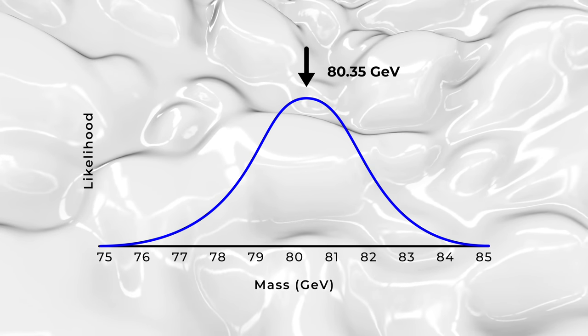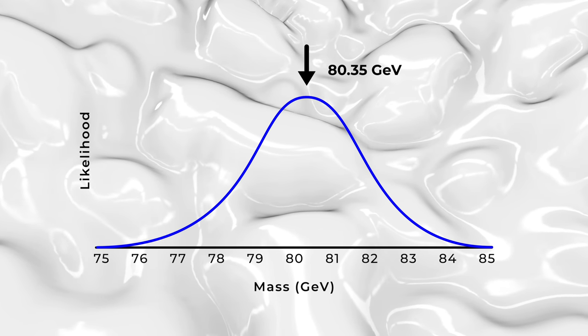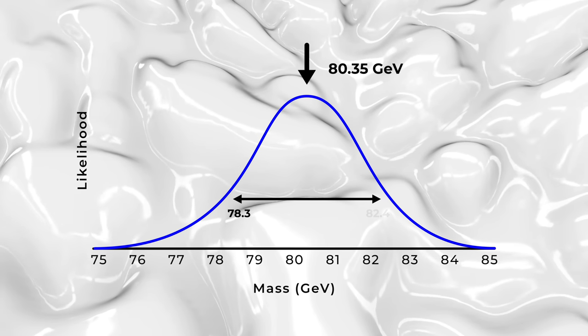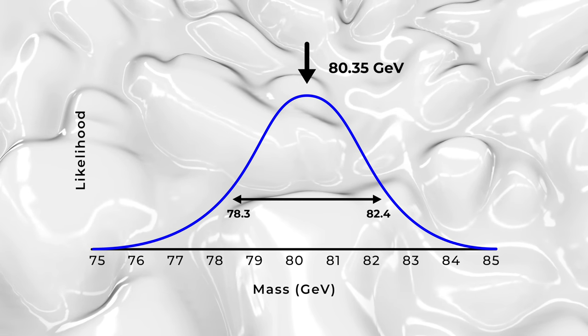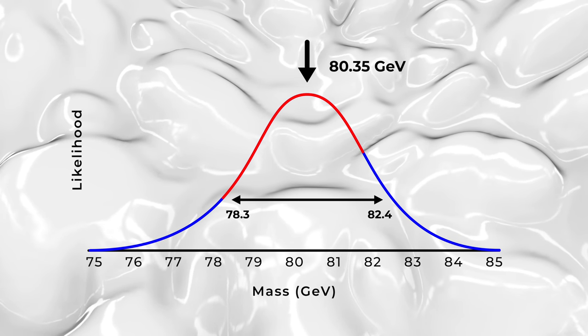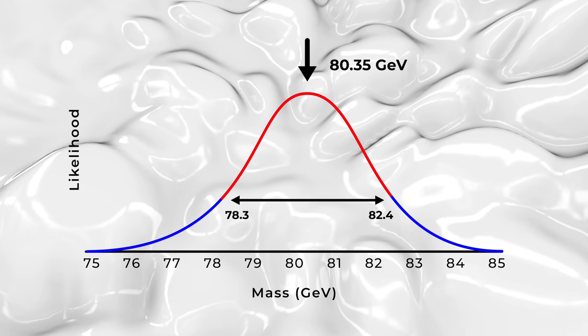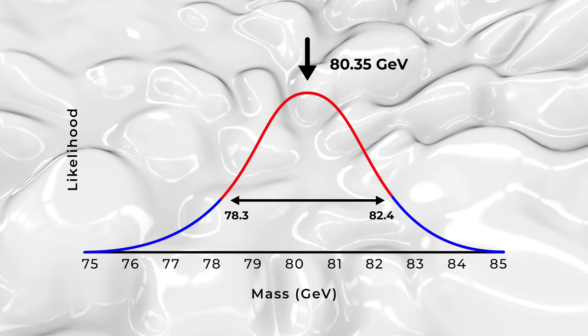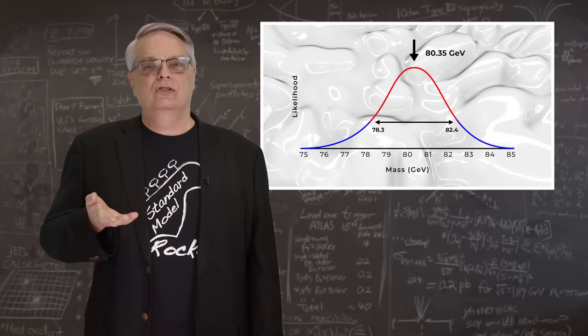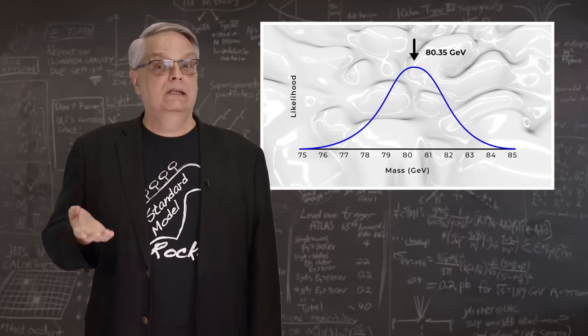In reality, every subatomic particle has a range of masses, with some having a large range and some having a small one. In the case of the W boson, the range is generally between 78.3 and 82.4 GeV. If you find a W boson, there's a good chance that it will have a mass in that range. You can see here a curve which kind of demonstrates this. Where the curve is high, it's likely the mass you find is there. Where it's low, it's unlikely that you can find a W boson with that mass. However, the numbers I just mentioned give you the typical range. Other masses are possible, with rapidly decreasing probability.